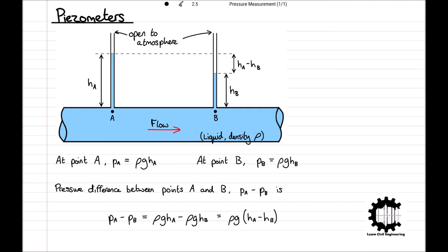That is the pressure difference is determined by measuring the height difference between the two columns of liquid h_a minus h_b and in practice the liquid density would already be known.